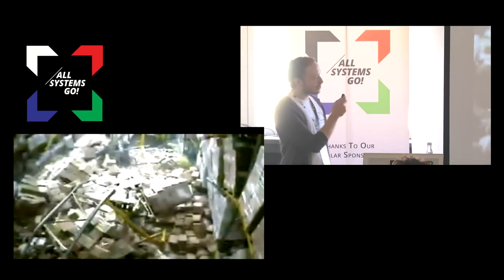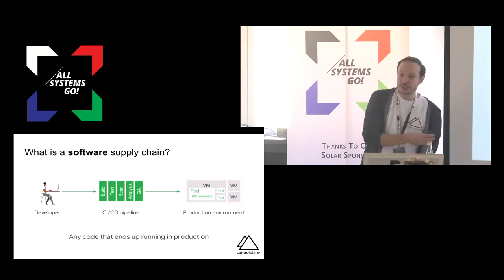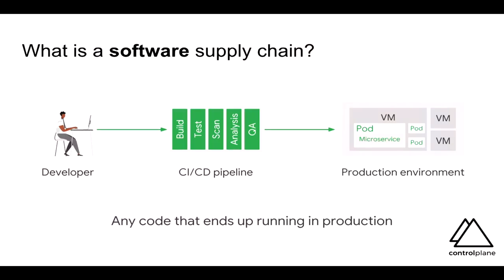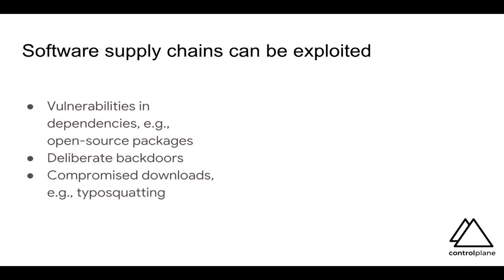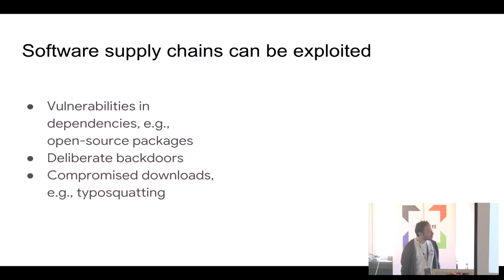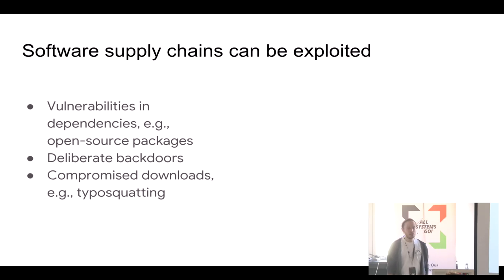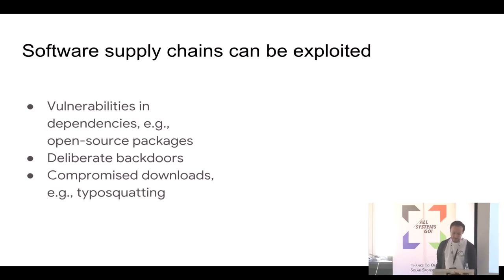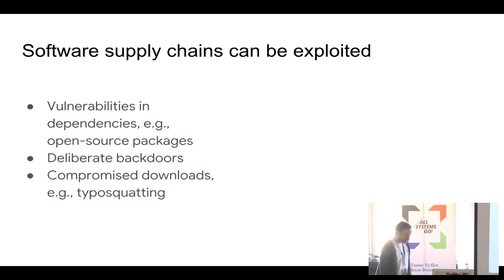So how does this relate to software? Ultimately it's any code that ends up running in production, and with modern development and deployment processes with CI and CD pipelines in the middle. Software supply chains can be exploited — bugs in libraries that our applications depend upon, for example Equifax and Struts. Deliberate vulnerabilities snuck into popular dependencies, either in the source code or compromising the hosting service or the infrastructure provider, or perhaps a compromised download, a man-in-the-middle attack, or typo squatting, which is especially popular now.